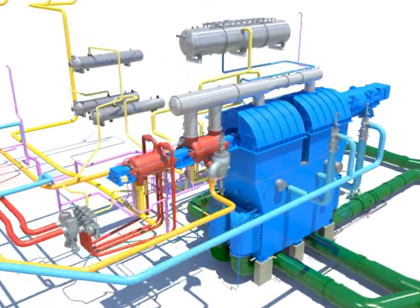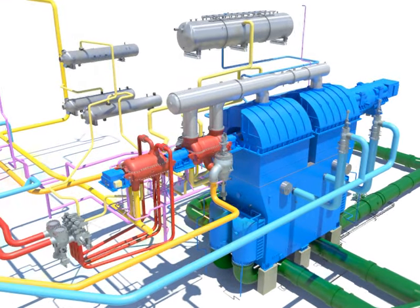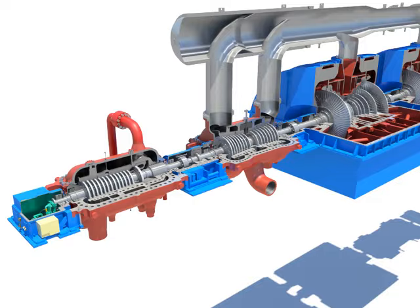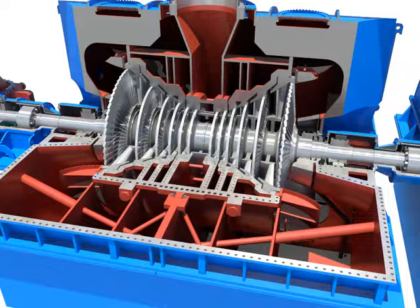The steam turbine is a heat engine which uses steam as a working fluid. It changes thermal energy into speed energy inside the nozzle by expanding high-temperature, high-pressure steam produced at the boiler, and also changes this speed energy into mechanical energy by crashing into the rotary vane.